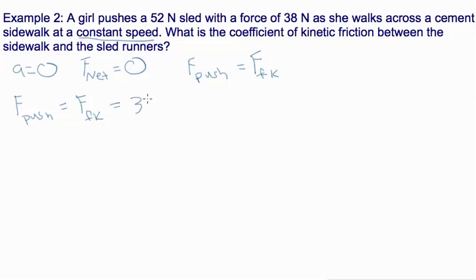We know that the weight of the sled is 52 newtons. And we said earlier that if we're on a horizontal surface the weight is equal to the normal force. So what is the coefficient of kinetic friction between the sidewalk and the sled runners?